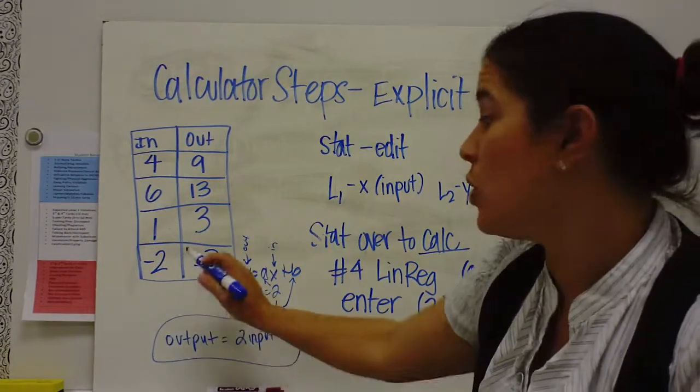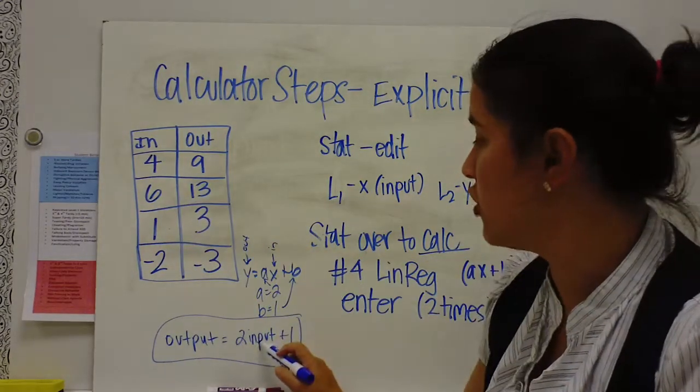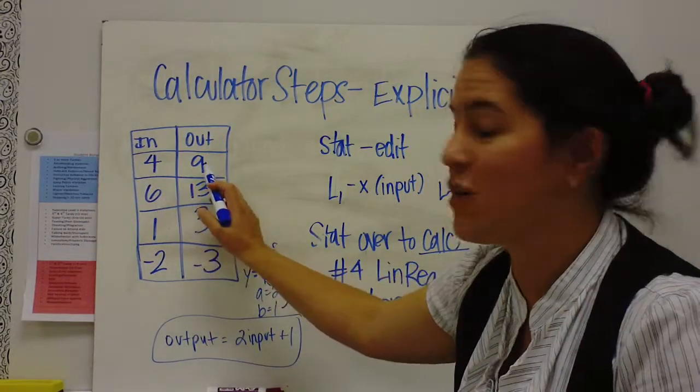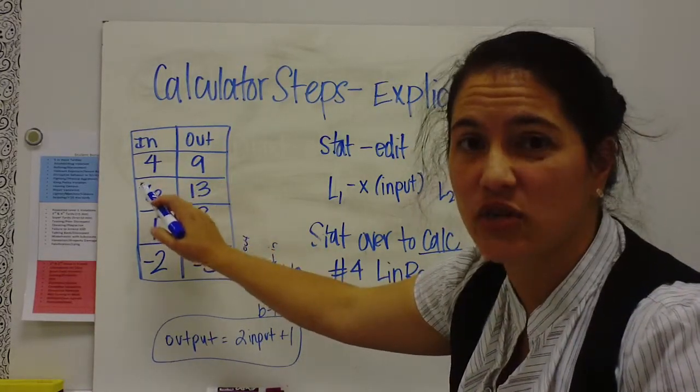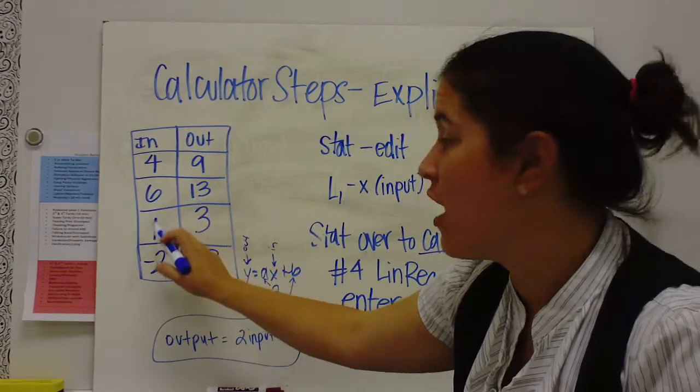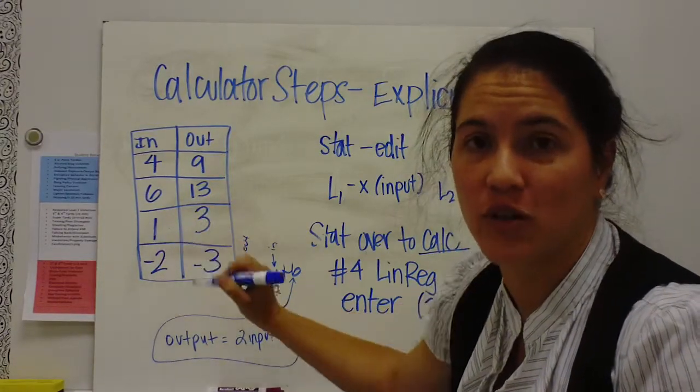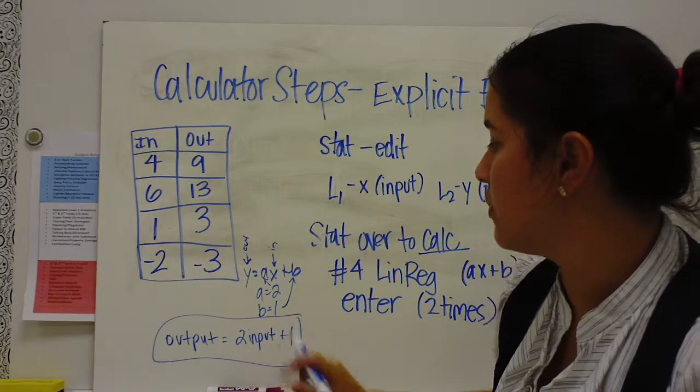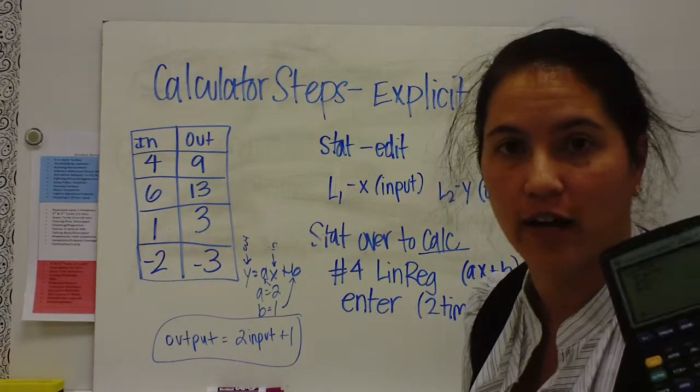So this is your rule. So what that says is 4 times 2 plus 1. 4 times 2 is 8 plus 1 is 9. 6 times 2 is 12 plus 1 is 13. 1 times 2 is 2 plus 1 is 3. So this is the rule, 2 times the input plus 1, and we got that from our calculator.